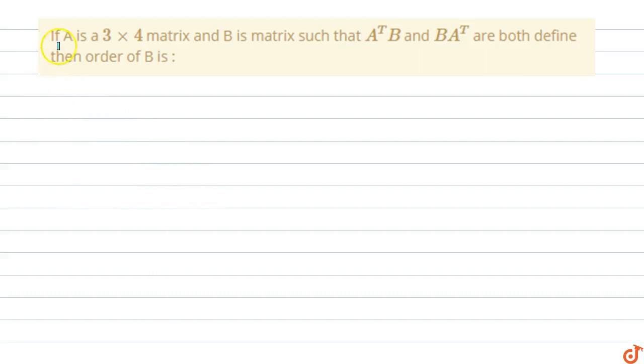In this question, if A is a 3 by 4 matrix and B is a matrix such that A transpose into B and B into A transpose are both defined, then order of B is?